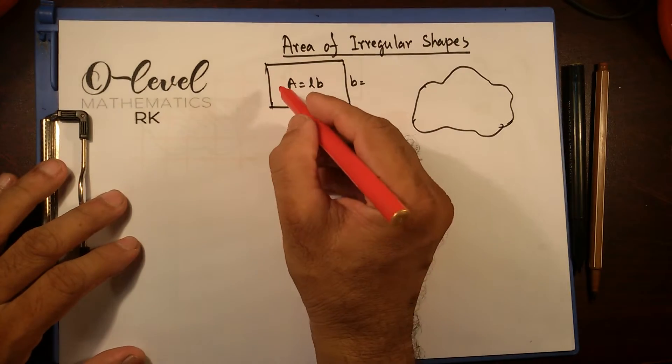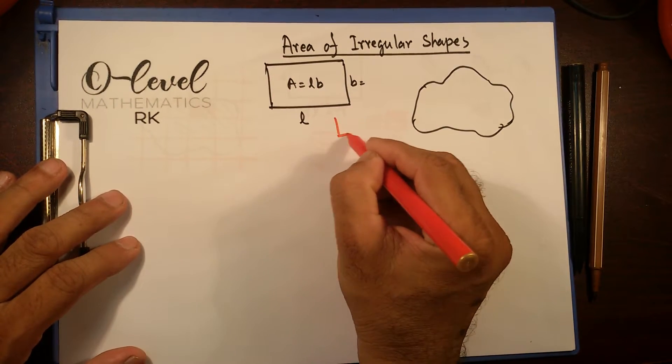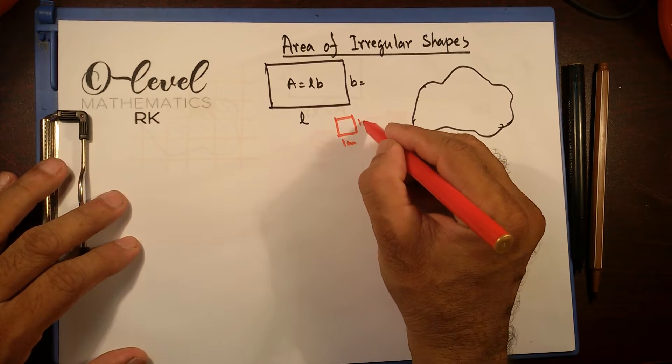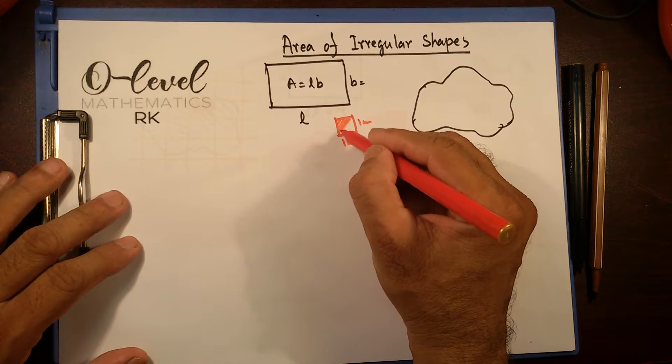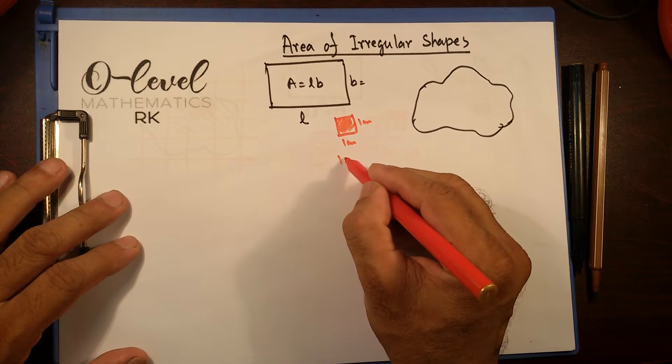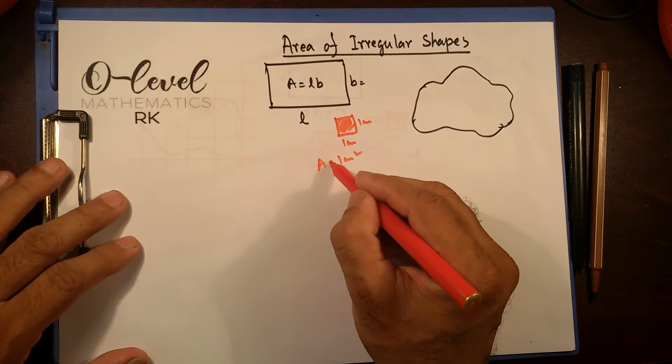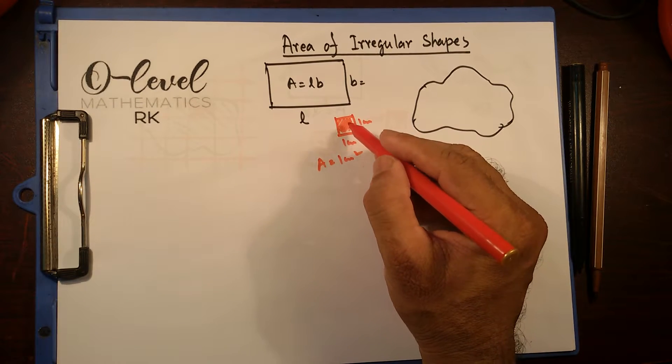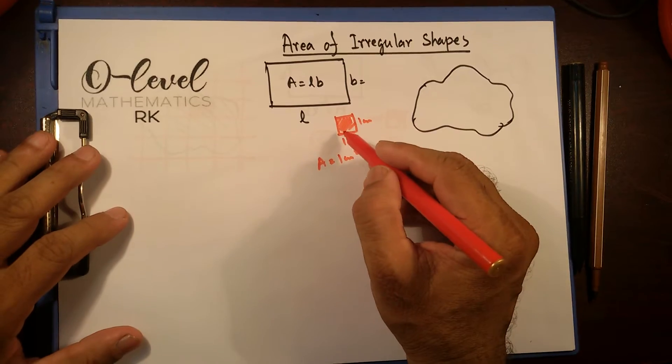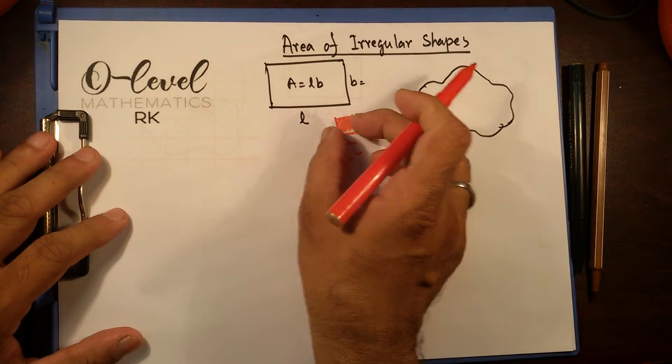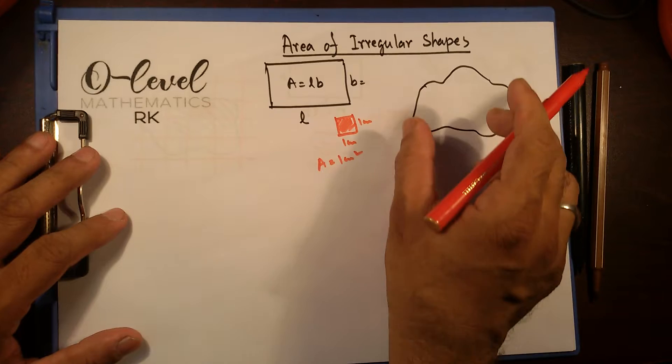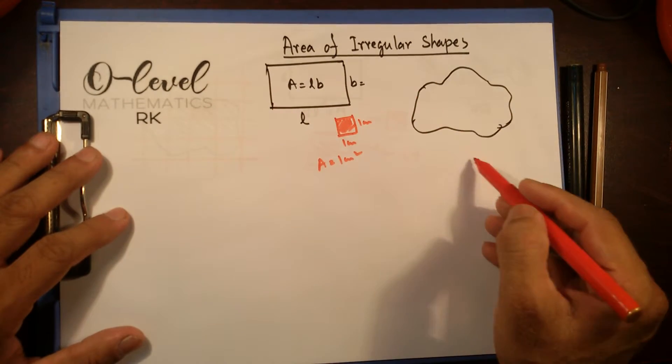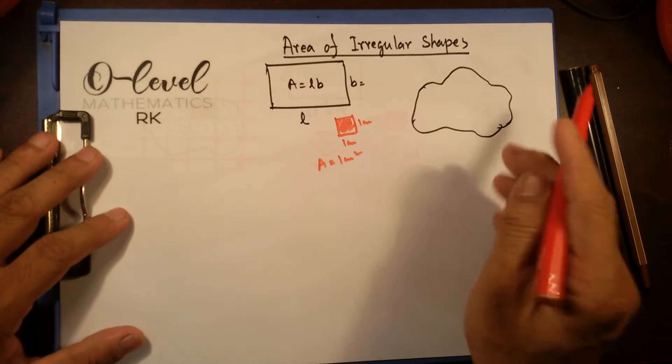I hope you remember how you find out the area of this square shape: one centimeter alongside, one centimeter vertical. This shape is one square centimeter with its area. This is the unit of measuring the area. So how many of this shape will fit in there?